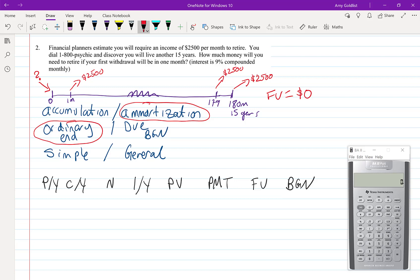Finally we've got our PY and CYs. So I'm taking out monthly payments and I'm compounding monthly. Those are the same and that's because I have J12 equals 9. Let's put this into the calculator and you should get used to drawing this out because we do this for every example.